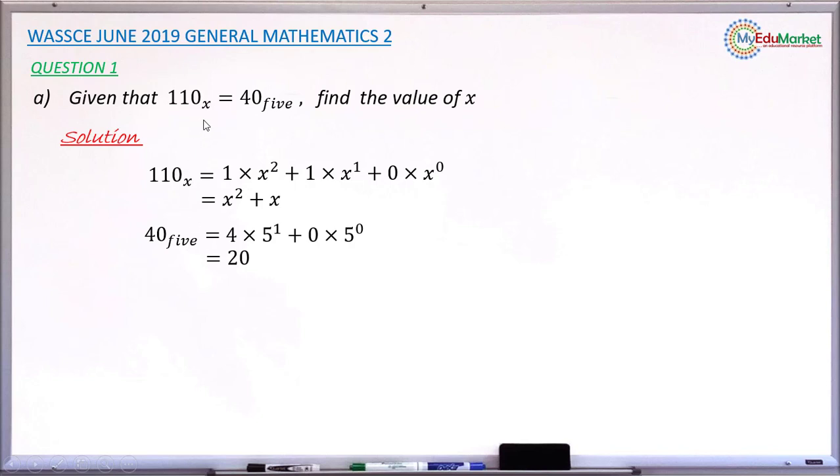See, initially the two numbers, that is 110 base x equals 40 base 5. So also, the equivalent which is in base 10 will also be equal.